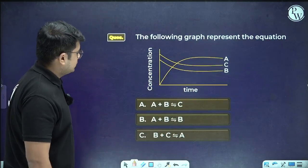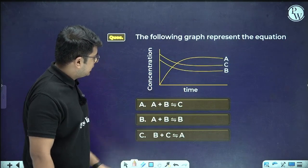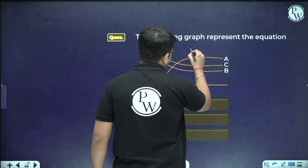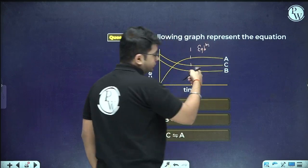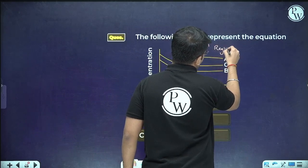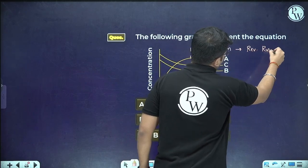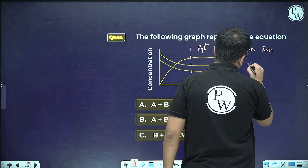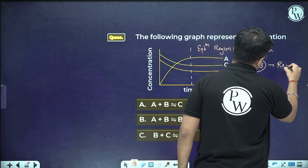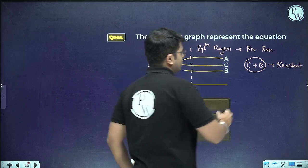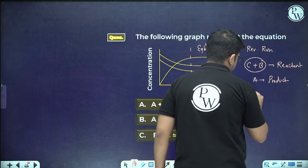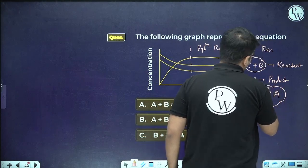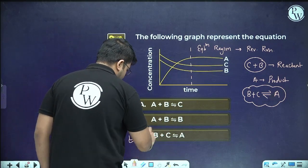Question: A concentration-time graph shows species C and B decreasing and species A increasing. What is the equilibrium reaction? Since C and B are decreasing, they are reactants; since A is increasing, it is the product. Therefore the equilibrium is: B + C ⇌ A, making option C the correct answer.